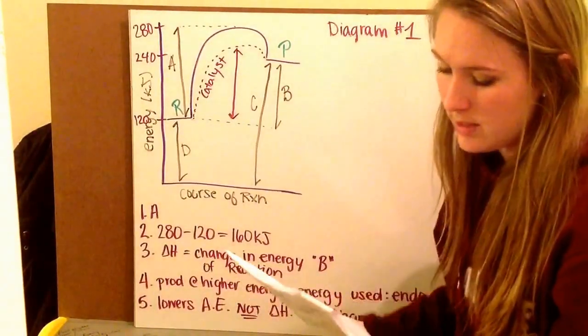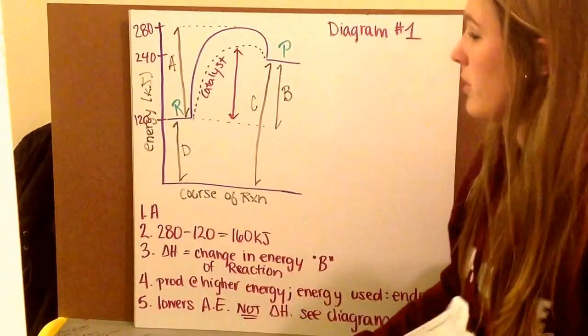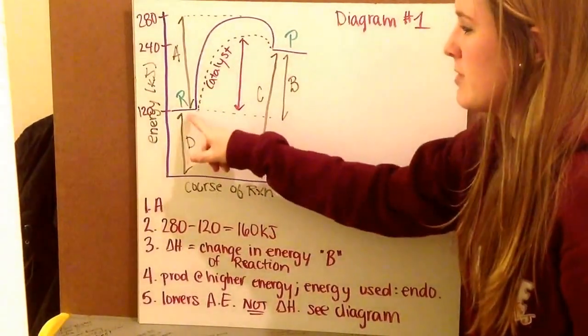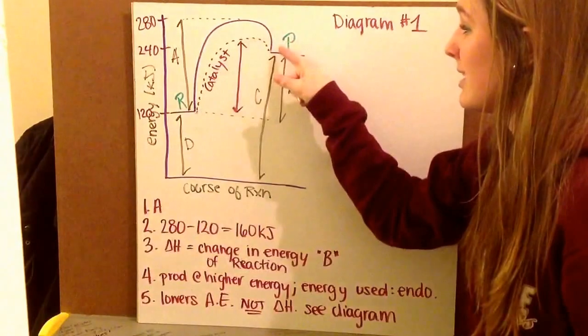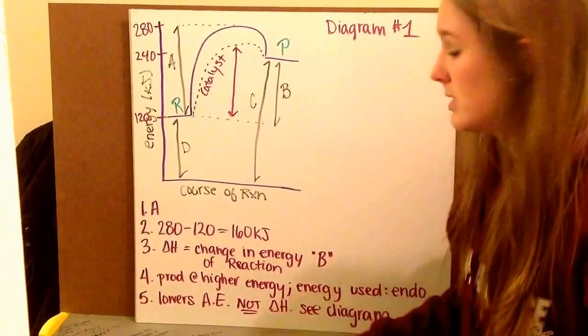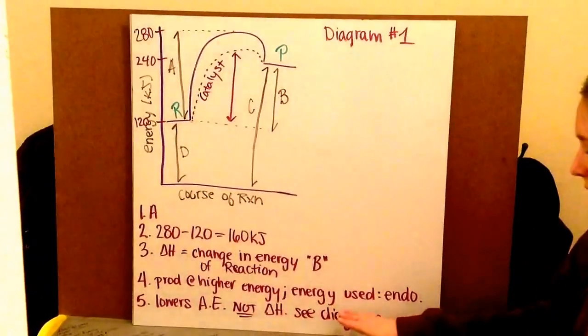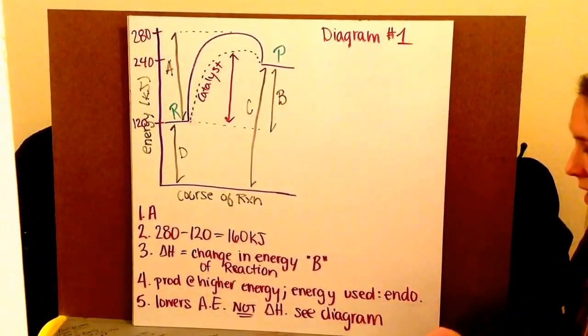Number four asks, is this reaction endo or exothermic? My products are ending at a higher energy than my reactants. So it took energy to get to my products. Therefore, energy was entered the system. Therefore, it must, on my products at a higher energy, energy is used. So it's endothermic.